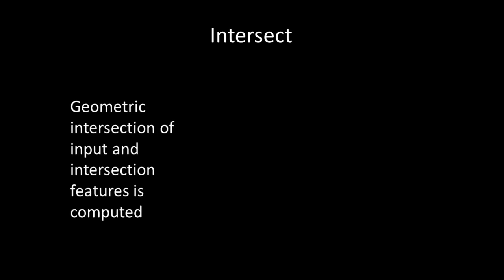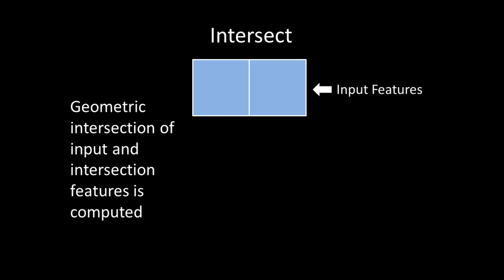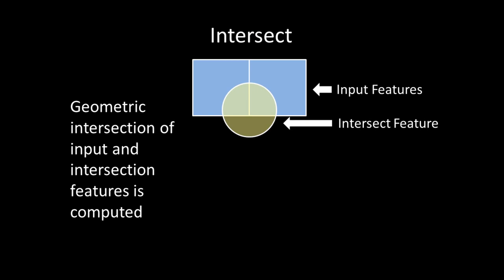Intersect is where the geometric intersection of input and intersection features is computed. For example, given a set of input features and an intersect feature, after the intersection geoprocessing operation is run, the output feature will only have the area where the inputs were intersecting with each other.